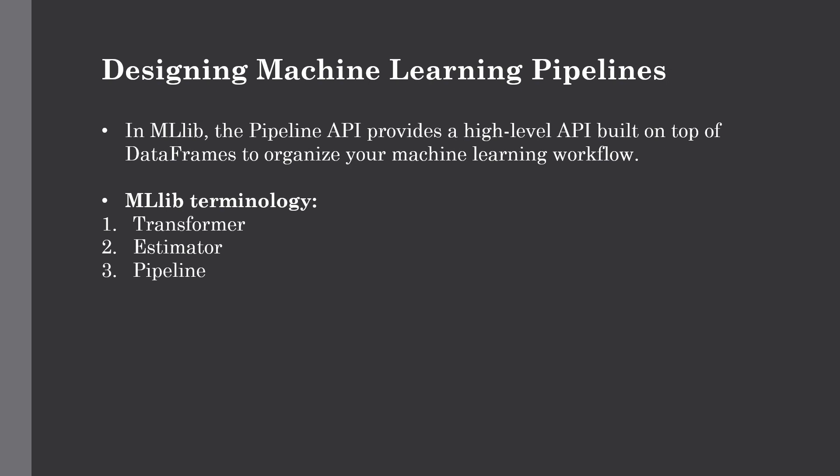Throughout this lecture we will utilize the San Francisco housing dataset from Inside Airbnb, which contains information about Airbnb rentals in San Francisco — including number of bedrooms, locations, review scores, and so on. Our end goal is to build a model for predicting the nightly rental prices for listings across the city. This is a regression problem because price is a continuous variable. The workflow will include feature engineering, building models, hyperparameter tuning, and model evaluation.